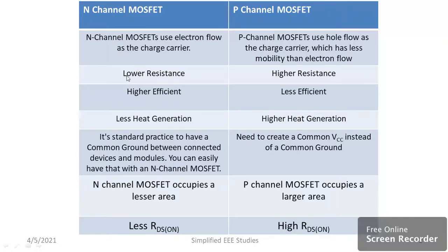Regarding n-channel MOSFET, it offers very less resistance as compared to p-channel MOSFETs. Because of that, the losses will be very much higher in case of p-channel MOSFET, where losses are less in case of n-channel MOSFET. Because of reduced losses, n-channel MOSFET offers high efficiency, and on the opposite side, p-channel MOSFET shows less efficiency.